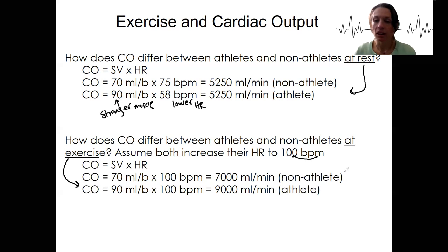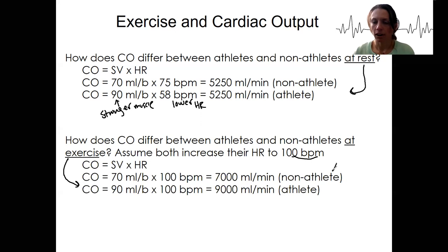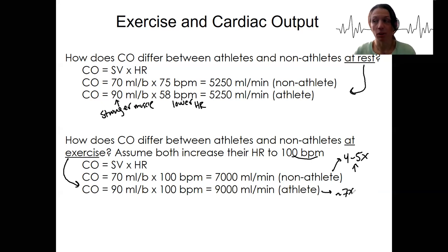Typically a non-athlete can increase cardiac output by four to five times during exercise — that's necessary to be able to get blood to your exercising tissues. Athletes can often increase it more like seven times or even more, and that's partly because of that stronger muscle tissue.